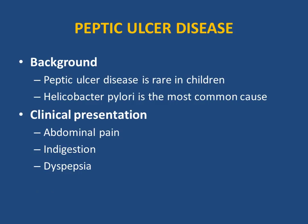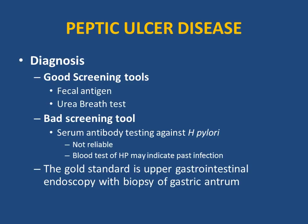Peptic ulcer disease is rare in children; the most common cause is Helicobacter pylori. Clinical presentation includes abdominal pain, indigestion, and dyspepsia. The best screening tools are fecal antigen and urea breath test — use either one. A bad screening tool is serum antibodies: do not order the blood test for H. pylori antibodies, as it may only indicate past infection and is unreliable.